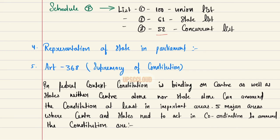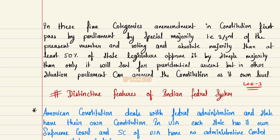Supremacy of constitution in a federal context: the constitution is binding on both center and state; neither center alone nor state alone can amend the constitution, at least in important areas. There are five major areas where center and state need to act in coordination to amend the constitution. In these five categories, amendment in the constitution is first passed by parliament by a special majority — two-thirds of present and voting members plus absolute majority — then at least 50 percent of the state legislatures must approve it by simple majority, and only then will it be sent for presidential assent. In other situations, parliament can amend the constitution at its own level.